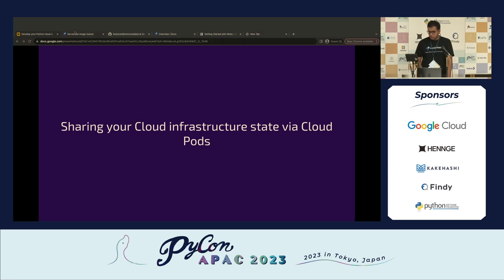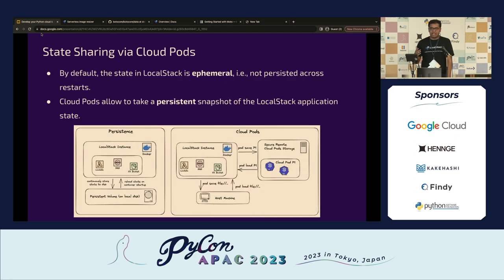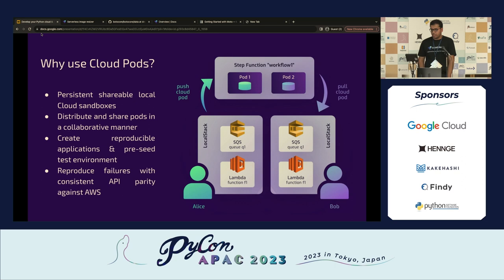We also have Cloud Pods — our infrastructure state management tool, like Git for your cloud infrastructure. What if you want to save your cloud infra, restore it at a particular point in time, and test it? Cloud Pods is exactly for that. The state in LocalStack is ephemeral by default, but Cloud Pods let you persist it. You can persist your local cloud infrastructure, share it with team members, create reproducible environments, seed CI environments, and reproduce failures with consistent parity against AWS.